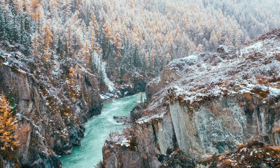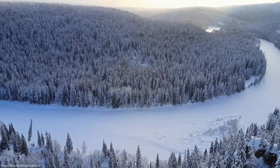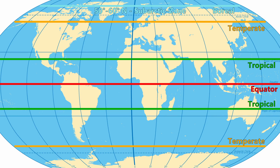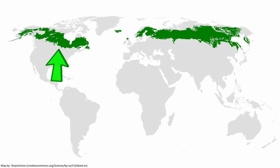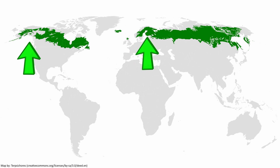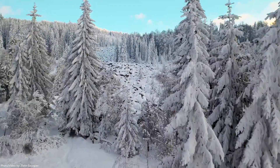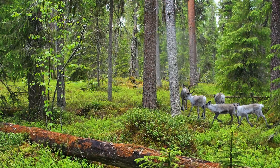Last but certainly not least, we will talk about the boreal forest, also called taiga, which can roughly be found between 50 and 60 degrees of latitude in the subarctic zone. Therefore, they can be found in Canada and Alaska, huge parts of Scandinavia and Siberia. Unlike the temperate forest with four seasons, the taiga only experiences two distinct seasons: a short, moist and mildly warm summer and a long, dark,